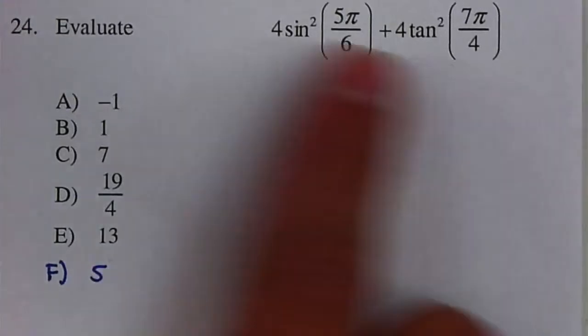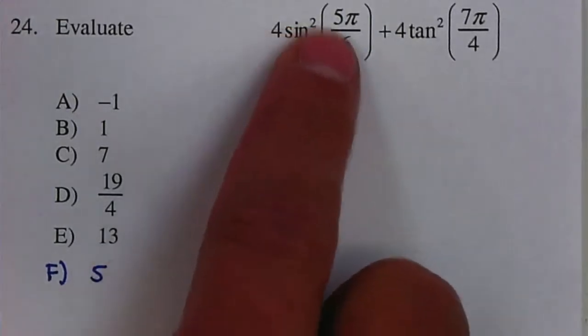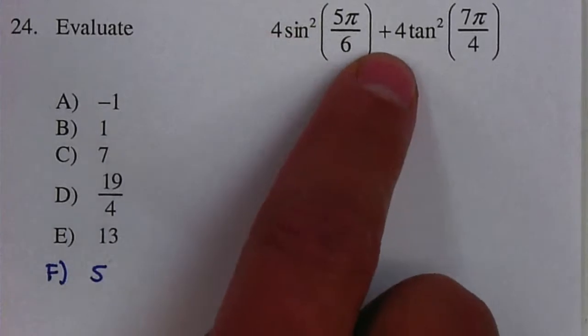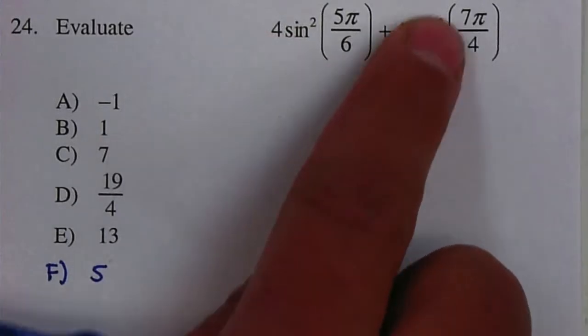They ask you to evaluate the following expression: 4 sine squared of 5 pi over 6 plus 4 tangent squared of 7 pi over 4.